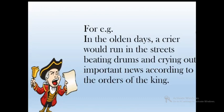But how would people in the olden days communicate? During the olden days, a crier would run in the streets beating drums and crying out important news according to the orders of the king. This crier would come and stand in a crowded or common place where people would meet, and a particular person — the messenger for the king — would read out the orders or news. The news would then spread among the people by word of mouth.